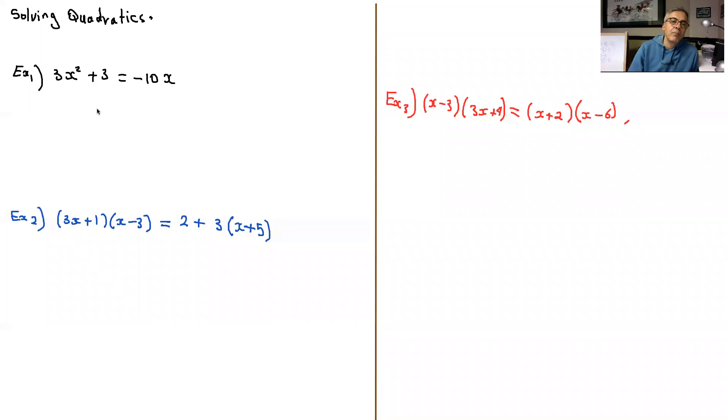Solve quadratics. So on this first one here, we have to move everything to one side, equate it to zero. So we'll have 3x squared plus 10x, just write it in degree order, plus 3 equals zero.